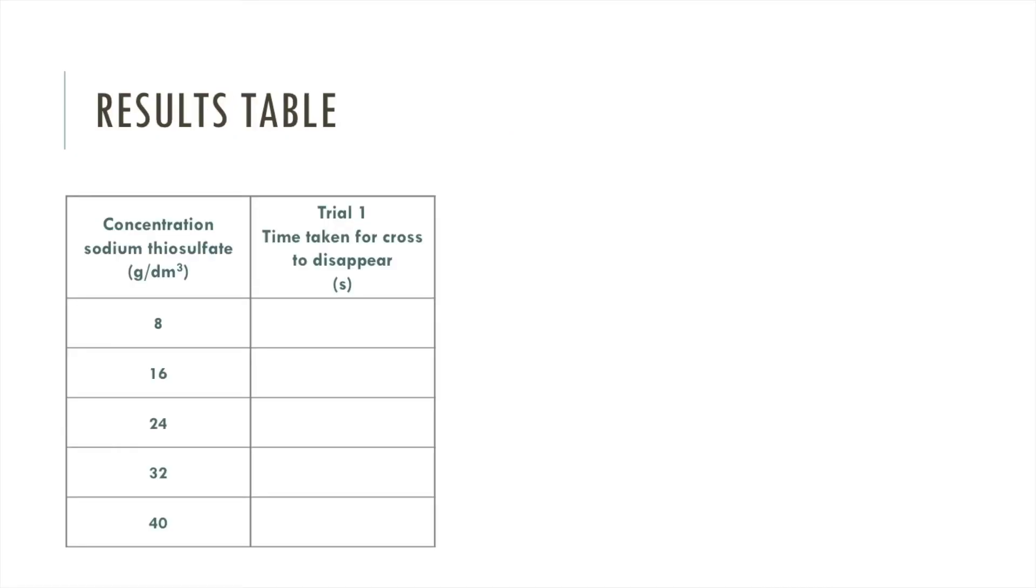We're going to record our results on a table like this. On the furthest left column we put our independent variable, so the concentration of sodium thiosulfate. Then we need a column to show the results from the dependent variable, which is the time taken for the cross to disappear.